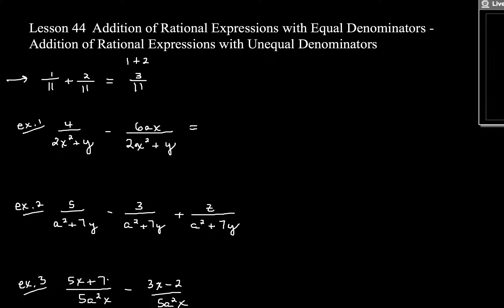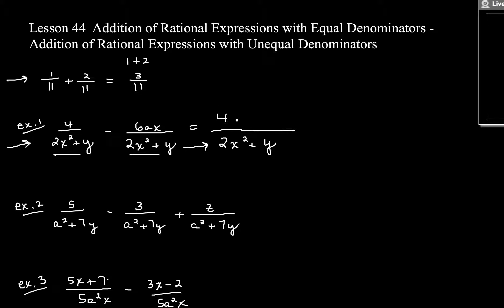Let's get more complicated. Obviously this looks way more complicated. So we find our common denominator — it's the same denominator — so we just copy that down: 2x squared plus y. If the denominators are exactly the same, you just copy it down and you add what's in your numerator. So we have 4 minus 6ax. And that's your final answer — there's no like terms to combine.